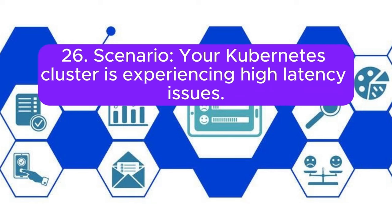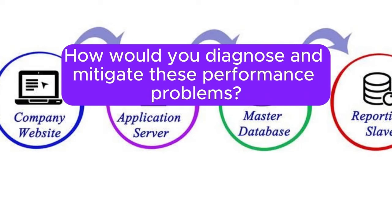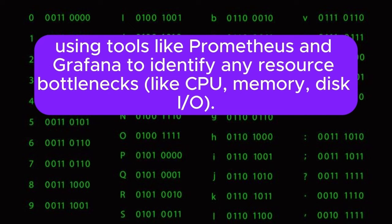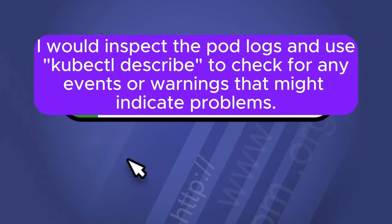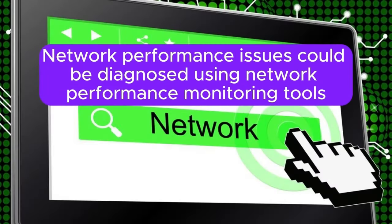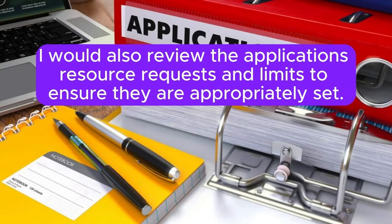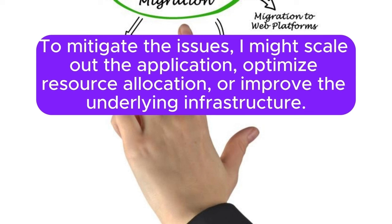Scenario 26: Your Kubernetes cluster is experiencing high-latency issues. How would you diagnose and mitigate these performance problems? Answer: To diagnose high-latency issues, I would start by monitoring resource utilization using tools like Prometheus and Grafana to identify resource bottlenecks like CPU, memory, or disk I/O. I would inspect pod logs and use kubectl describe to check for events or warnings that might indicate problems. Network performance issues could be diagnosed using network performance monitoring tools and checking for misconfigured network policies or ingress controllers. I would review the application's resource requests and limits. To mitigate the issues, I might scale out the application, optimize resource allocation, or improve the underlying infrastructure.